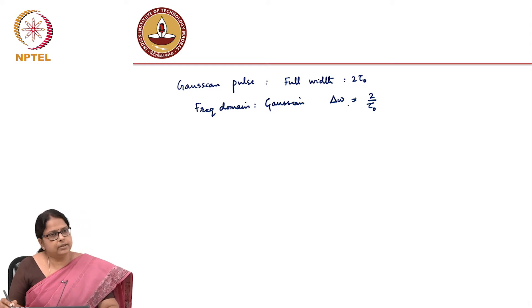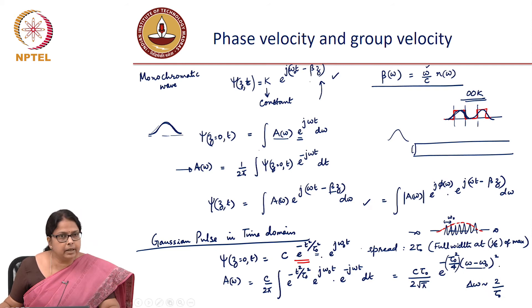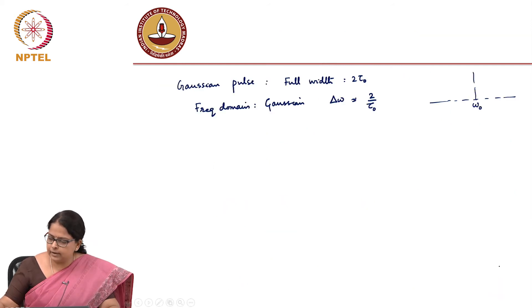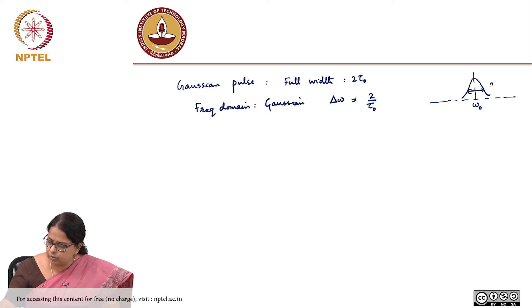The reason why we are calculating this is to show that in the frequency domain, how is it going to look like? If I just look at the positive frequency at the center frequency omega naught, it is shifted with respect to omega naught. At the center frequency, it is also going to look like a Gaussian with your 1 by E spread as 2 divided by tau naught.